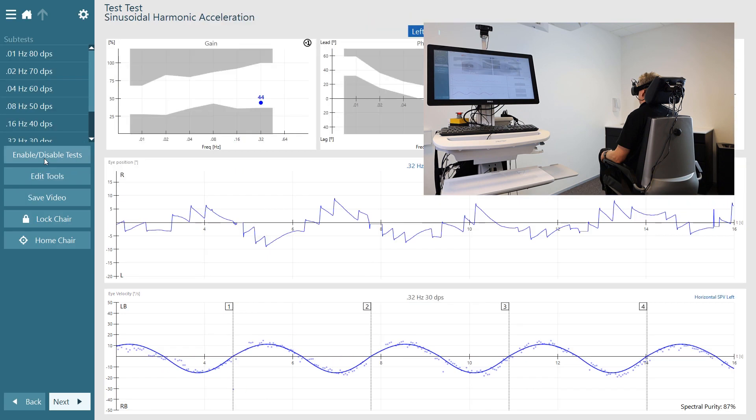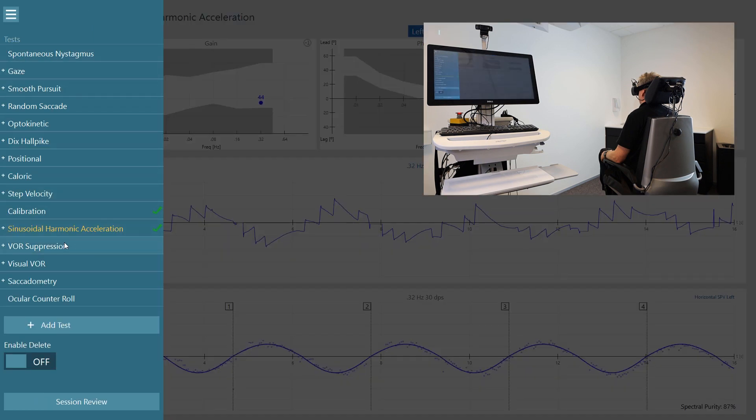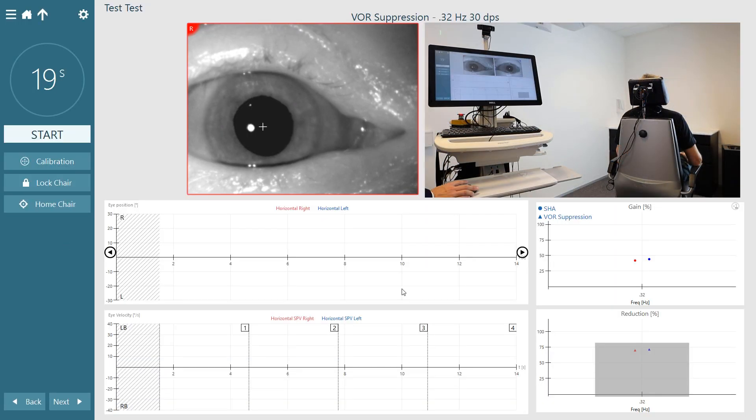We will be comparing the gain measured during Sinusoidal Harmonic Acceleration with the gain measured during VOR suppression. The only difference being that when performing the VOR suppression test, the patient will be able to see a fixation light inside their goggle.